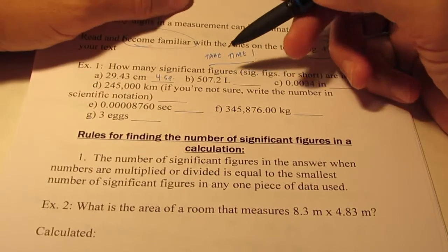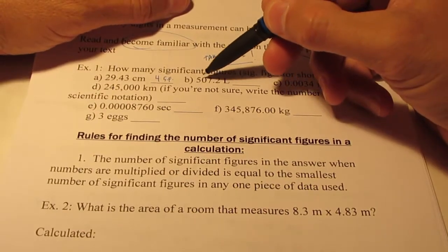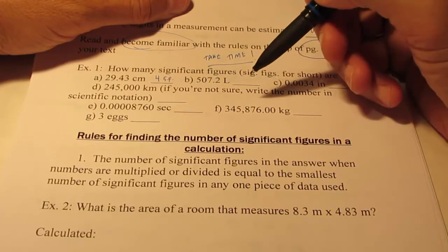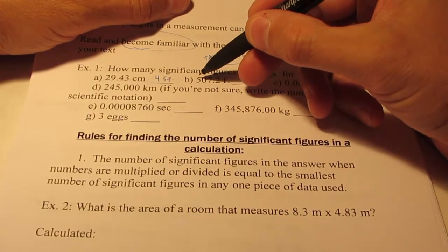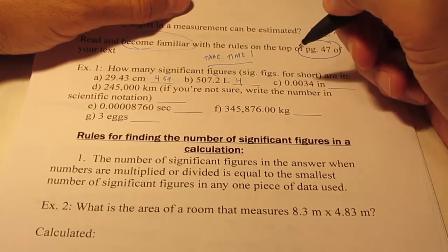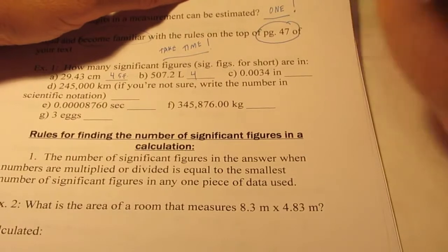How about letter B, 507.2? Let's see, that's a zero between non-zero digits, so that zero is significant. So we'd say that there are one, two, three, four significant figures in that measurement as well.